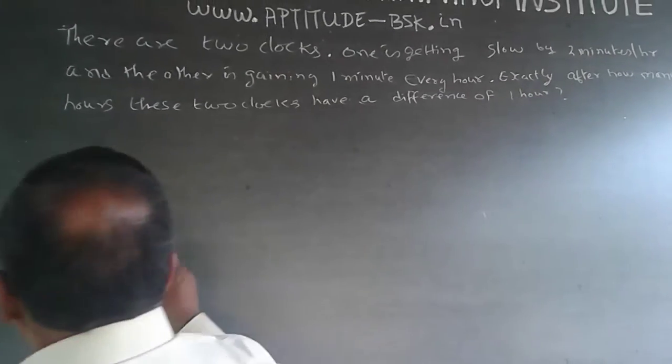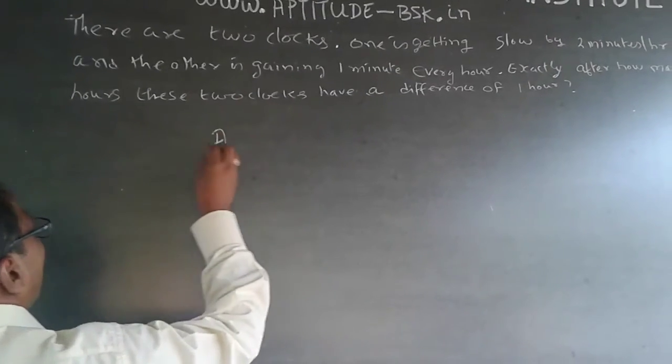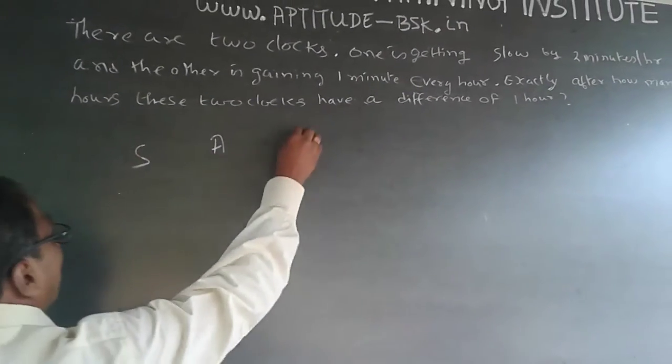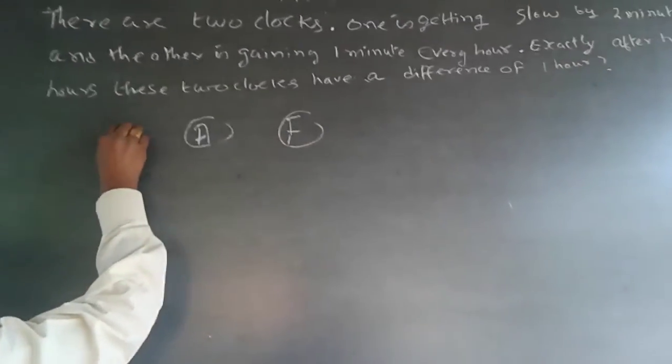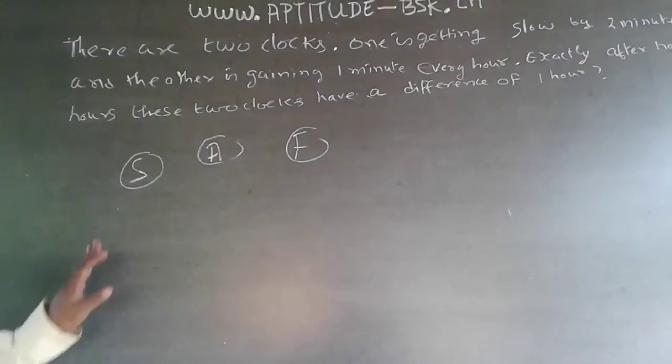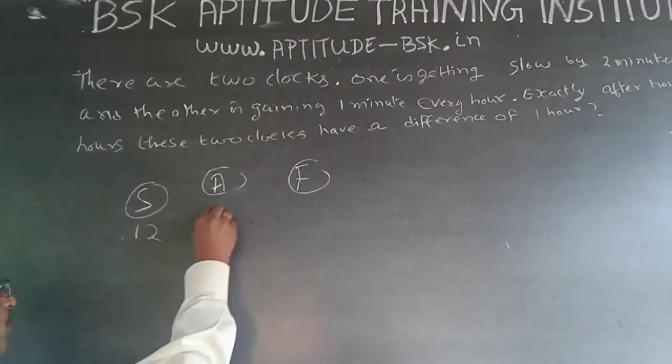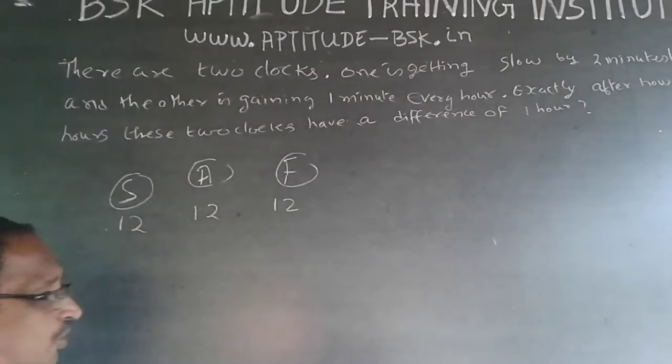Now, just for the sake of understanding, what I am writing is, this is an actual clock, this has a slow clock and this has a fast clock. F is a fast clock, actual clock and slow clock. I am setting timings as 12-12-12 for all three at the same time. So, I am setting time at 12 o'clock.